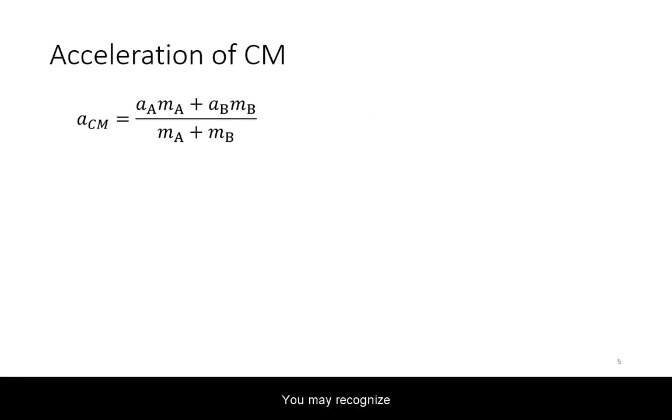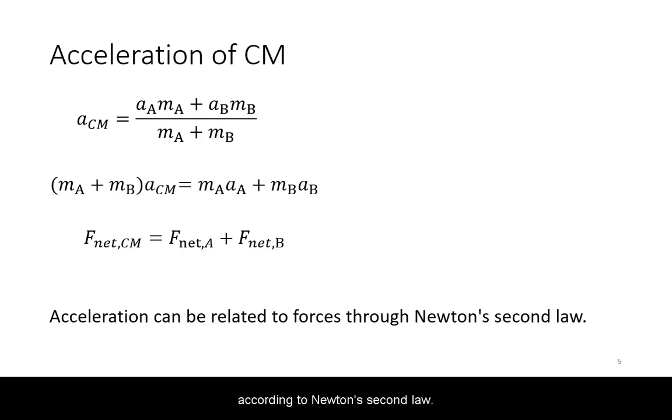You may recognize that mass times acceleration is equal to the net force on an object according to Newton's second law. Hence, the net force on the system is equal to the vector sum of the net force on the objects that make up the system.